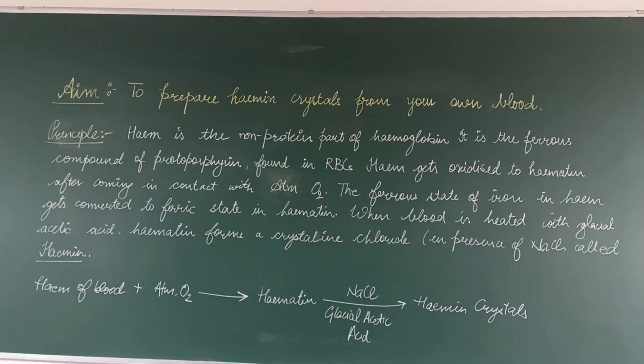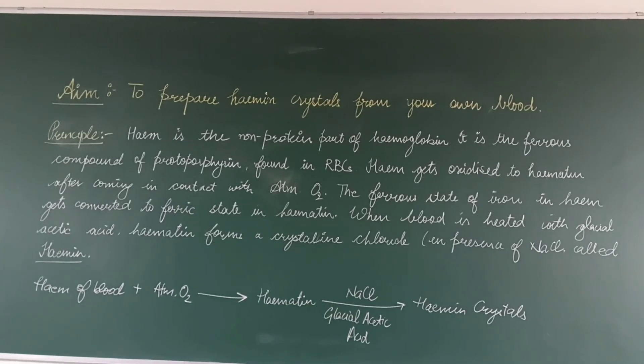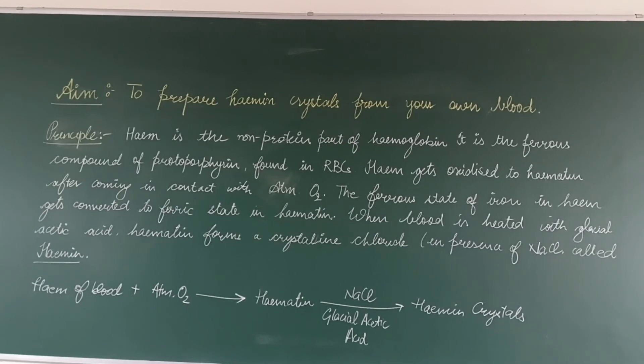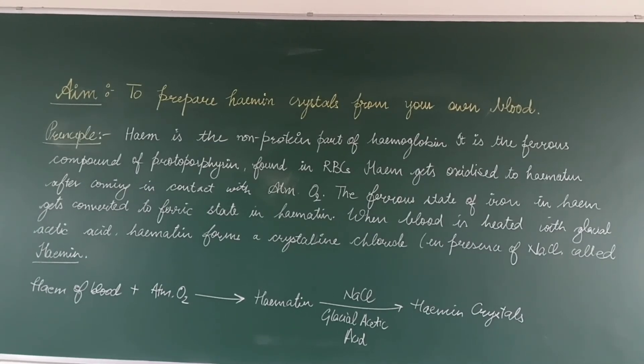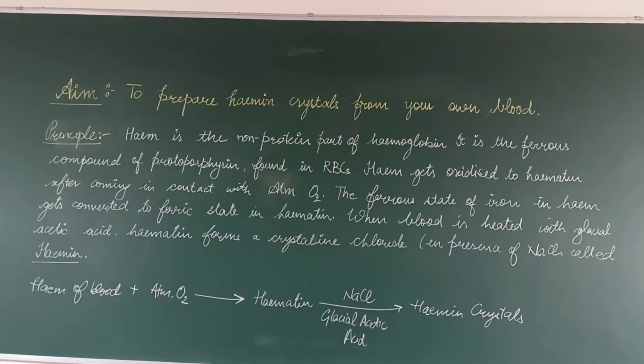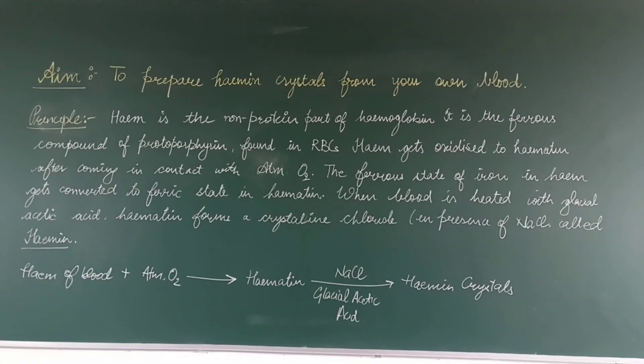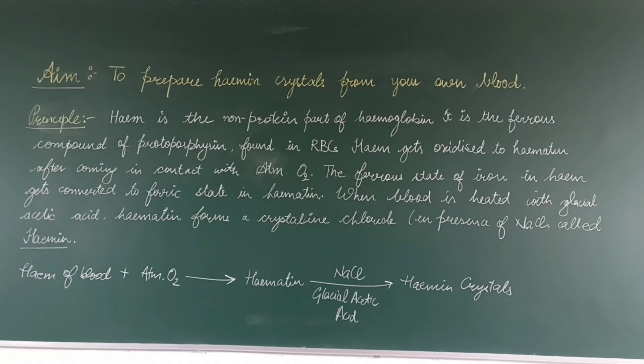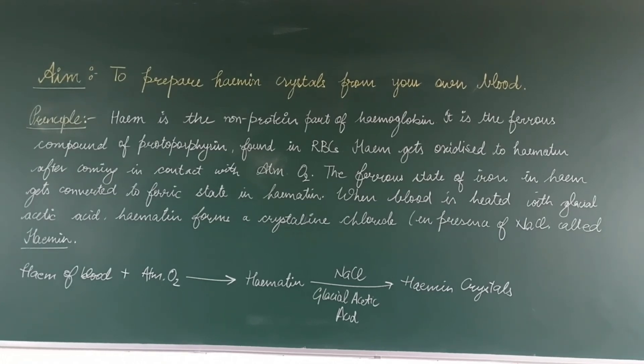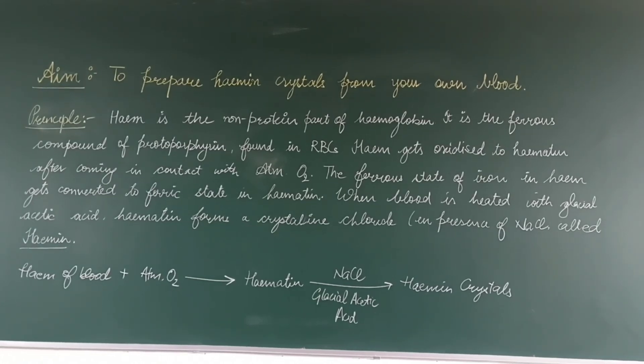Heme gets oxidized to hematin after coming in contact with atmospheric oxygen. The ferrous state of iron in heme gets converted to ferric state in hematin. When blood is heated with glacial acetic acid, hematin forms a crystalline chloride in the presence of NaCl called hemin.